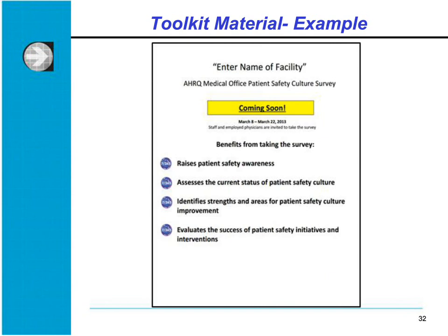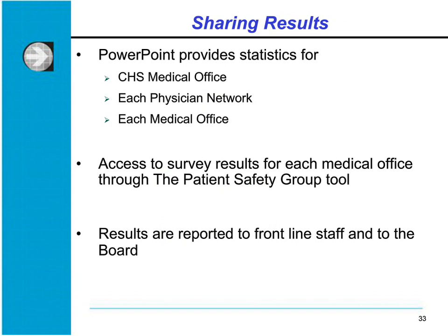The survey flyer provides the web link for the survey, explains why we're taking it — to improve patient safety awareness and identify strengths and areas for improvement — and reinforces that we use the data for improvement. We really want our teammates to understand the survey's benefit. Once the survey is complete, the next step is sharing results, which we try to do within two months. We provide aggregate statistics for CHS medical offices overall, broken down by physician network and then by individual medical office.